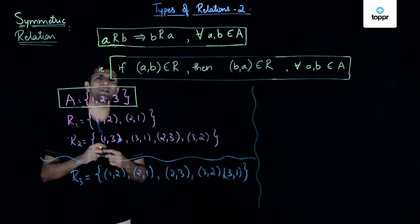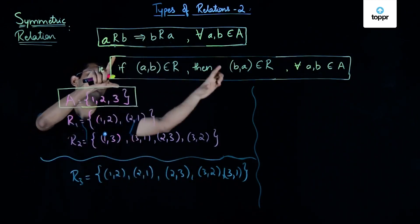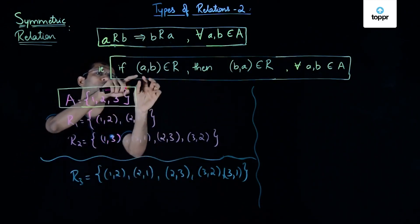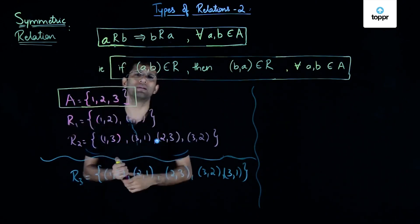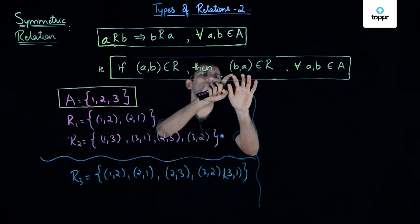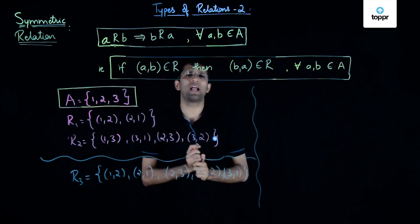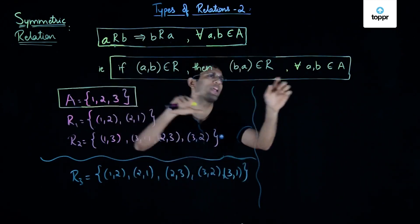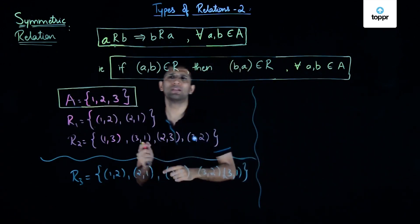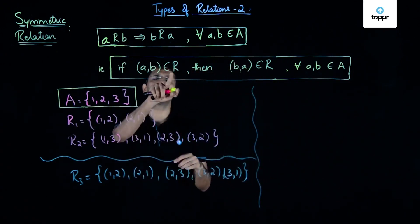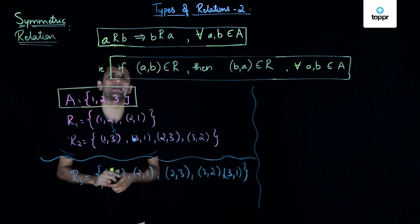This can also be stated in a second way: if the ordered pair (A, B) is an element of relation R, then (B, A) should also be an element of R. When this condition is satisfied for every A and B belonging to set A, then we say that R is a symmetric relation on the set A.